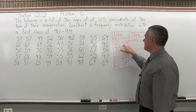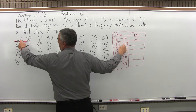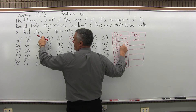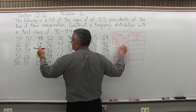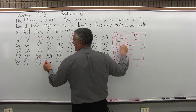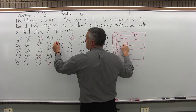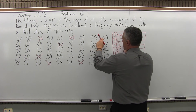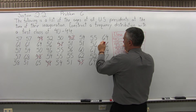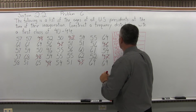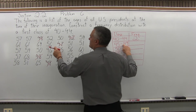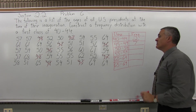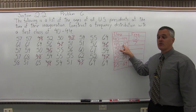The next class is 45 to 49. Going through the columns, I count up the values between 45 and 49 — that's why it's not a bad idea to cross them off as you use them. There are 7 presidents that were between 45 and 49 when they were inaugurated.